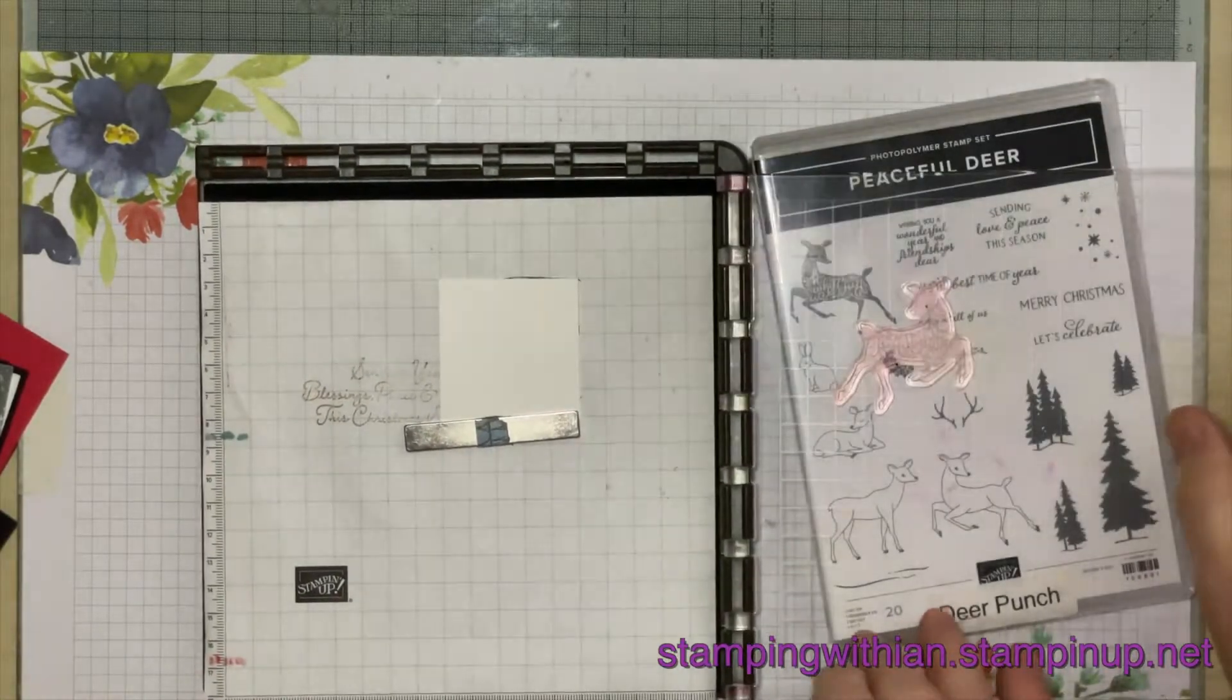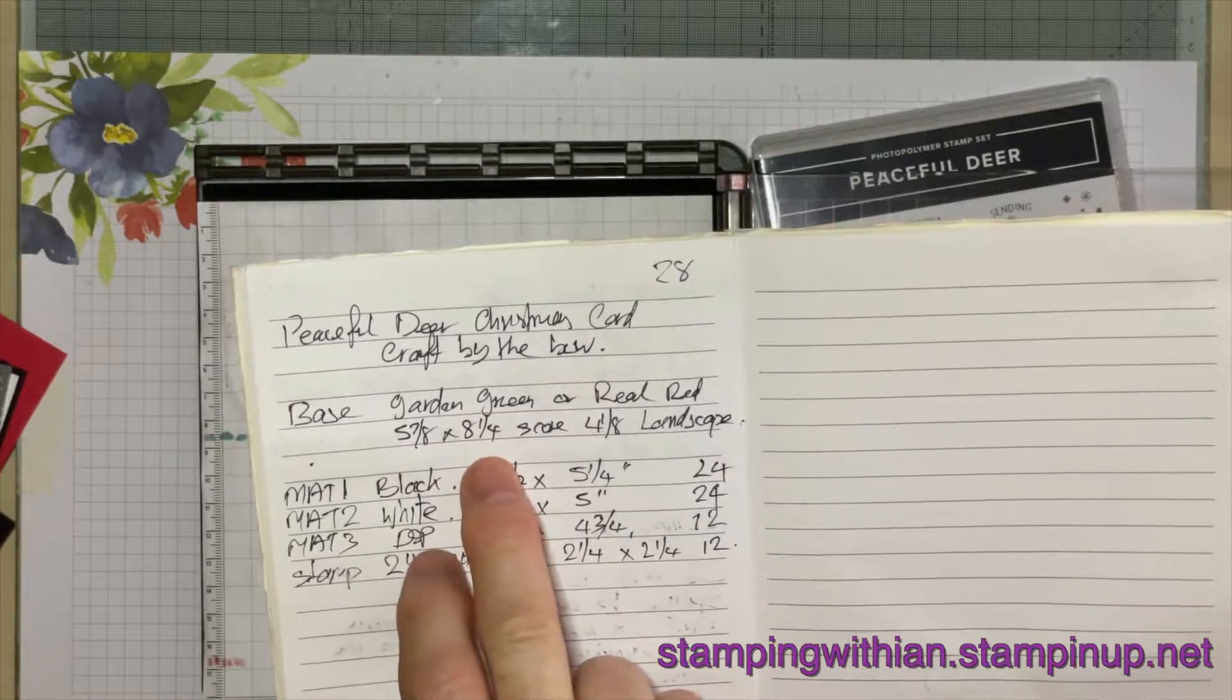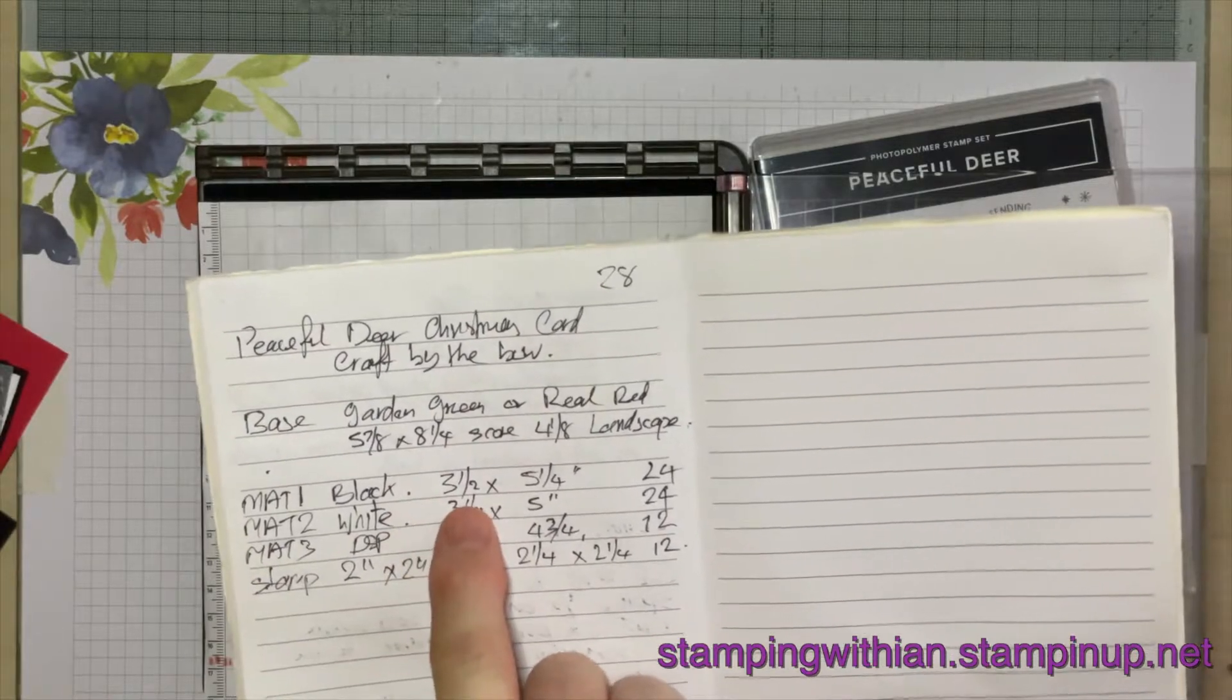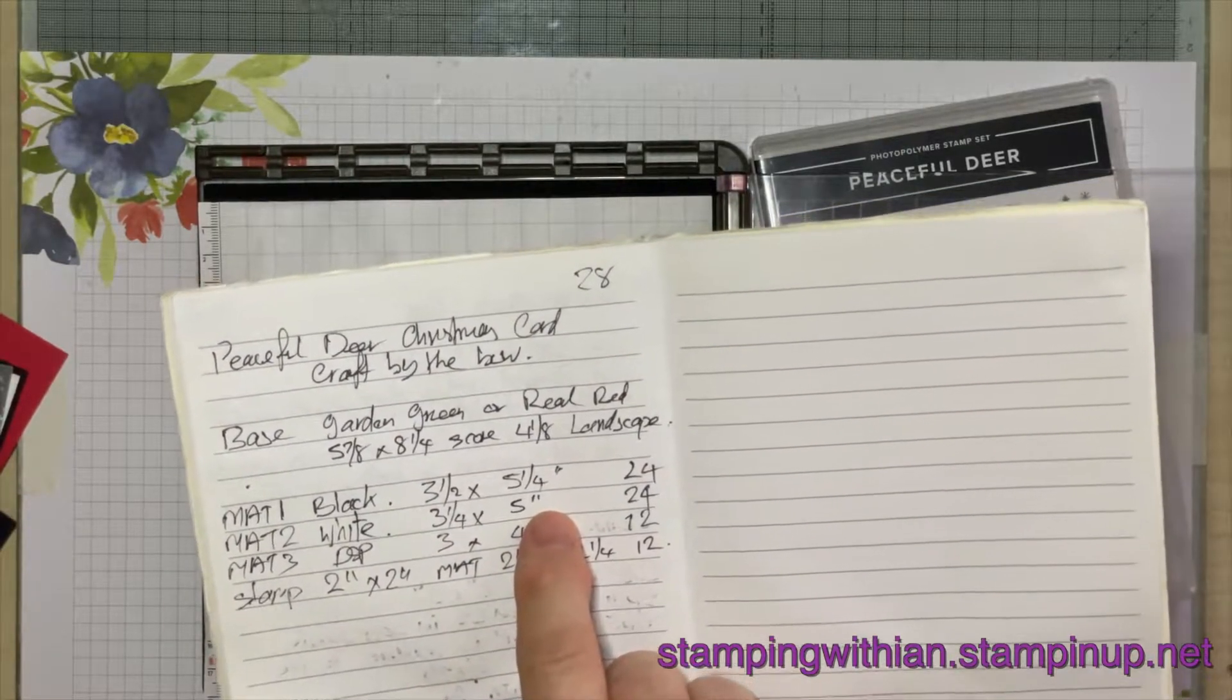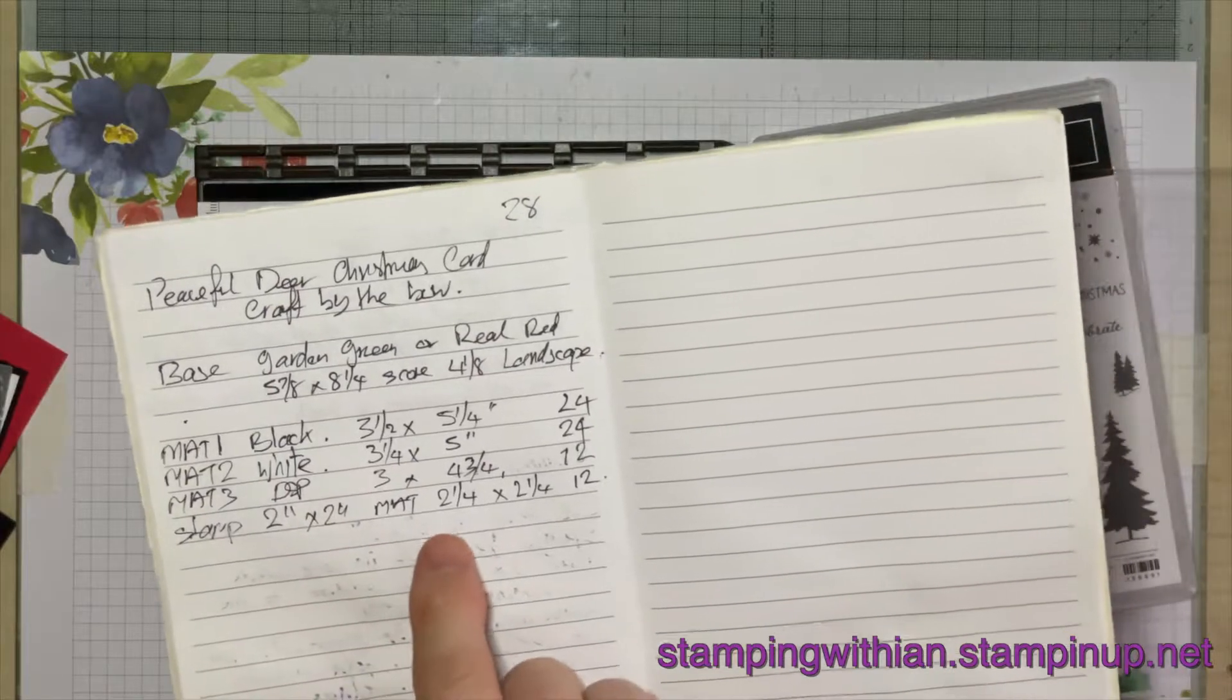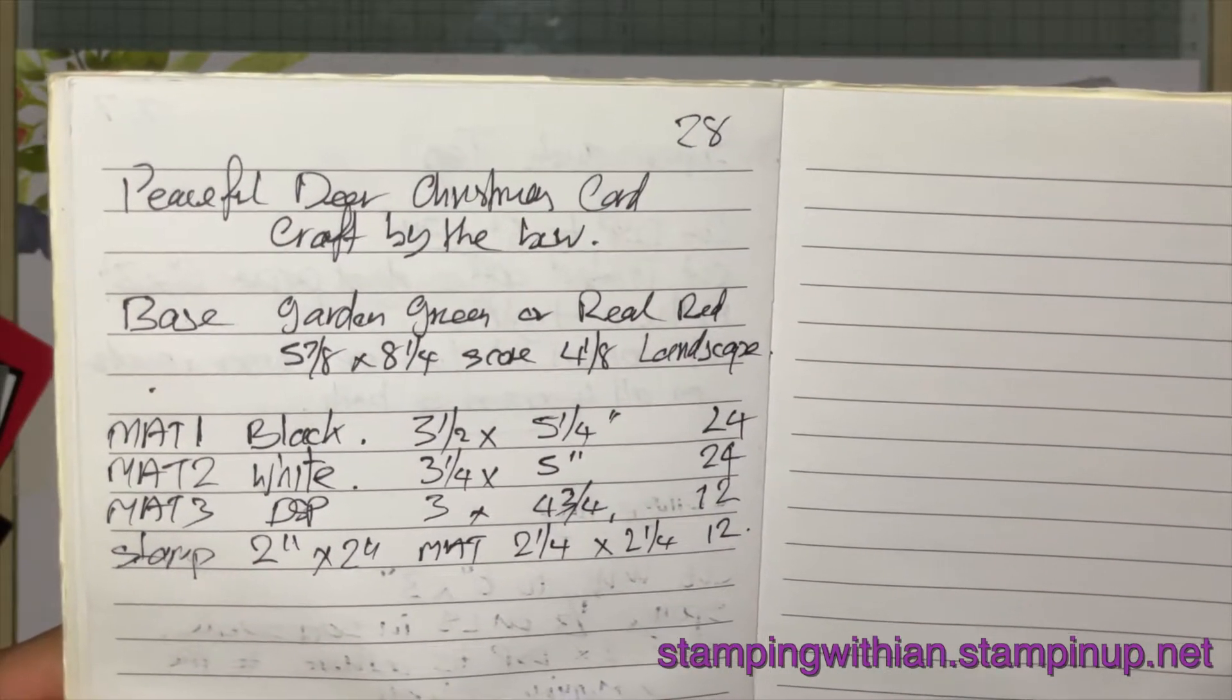Let's go through the measurements. I hope you can see this. But I'll read this out anyway. The base is five and seven eighths by eight and a quarter. Score at four and one eighth. And we're making a tent card. It'll be in landscape. First mat is the black, three and a half by five and a quarter. The second mat is the white, three and a quarter by five. One of these is going to be stamped with the sentiment. The DSP mat is three by four and three quarters. And the stamped piece is two by two. And the mat piece for that is two and a quarter by two and a quarter. So if you just want to pause that or take a screenshot. I'll just leave it there for a second.